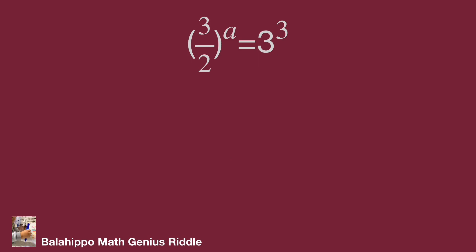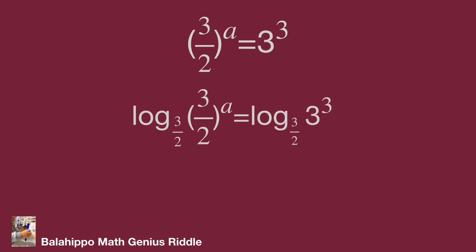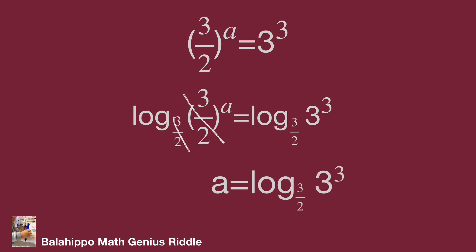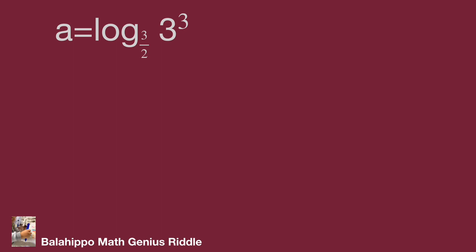I'm going to utilize logarithm to get the value of a. So log base 3 over 2 on both sides. We have log base 3 over 2 of quantity 3 over 2 power of a equal to log base 3 over 2 of 3 cubed. Eliminate 3 over 2 on the left side of the equation. The equation becomes a equal to log base 3 over 2 of 3 cubed.